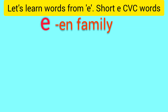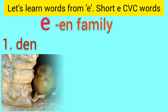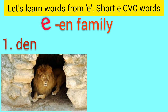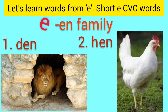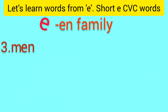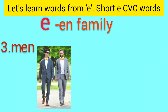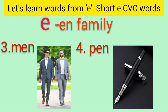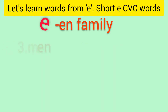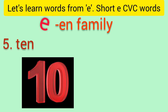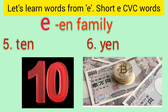Next family is the EN family words. Number one is D-E-N: den. Number two is H-E-N: hen. Number three is M-E-N: men. Number four is P-E-N: pen. Number five is T-E-N: ten. Number six is Y-E-N: yen — the Japanese currency.